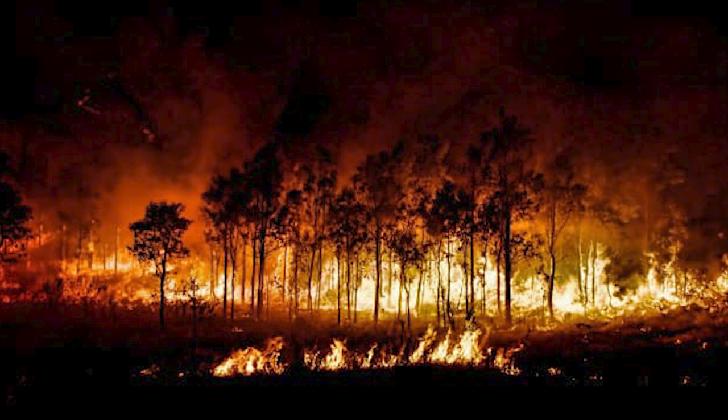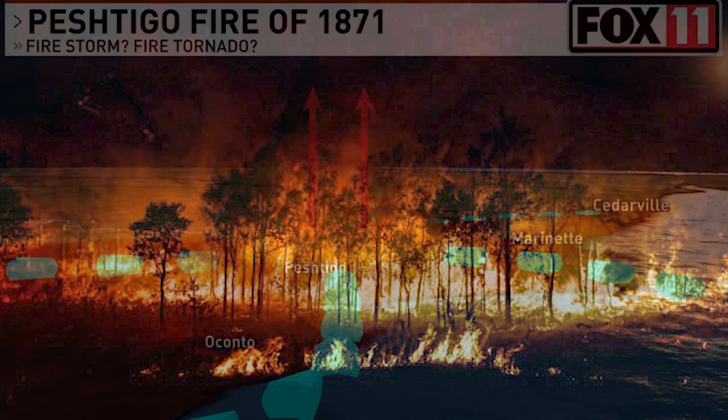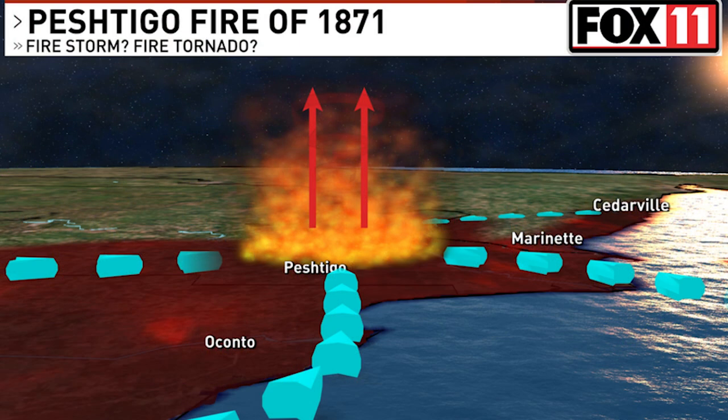These people were caught completely off guard by a wall of rushing fire. They thought it was the end of the world. Some survivors reported that the firestorm created whirling tornadoes of fire that picked up and tossed rail cars into the air.